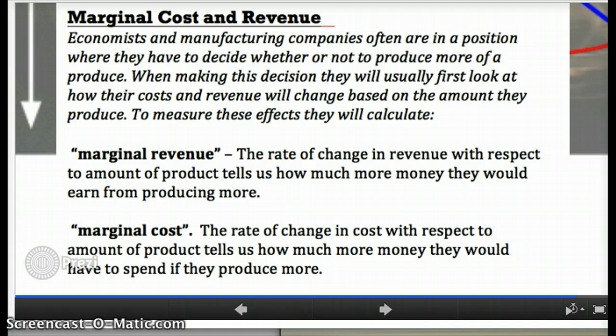To put it practically, marginal revenue tells us how much more money you would earn from producing more, and marginal cost tells us how much more money you would have to spend in order to produce the same amount more. Pause if you need to look at these definitions. Otherwise, we'll do our last example.